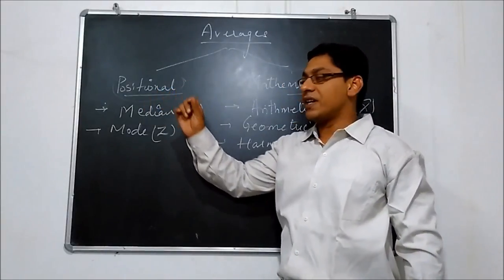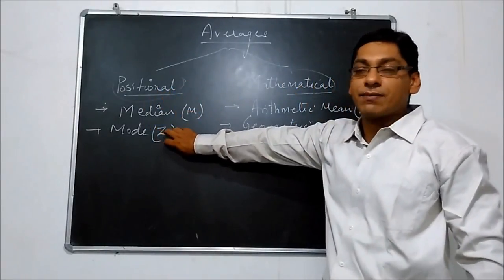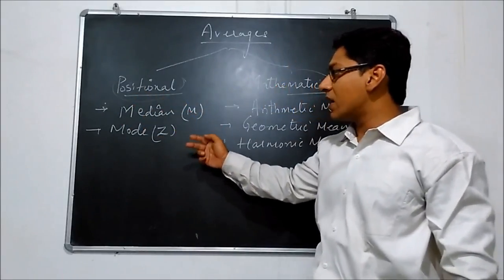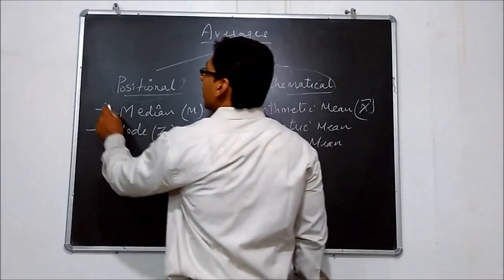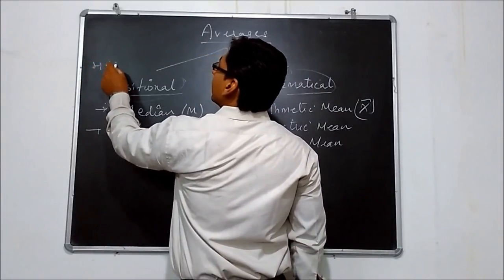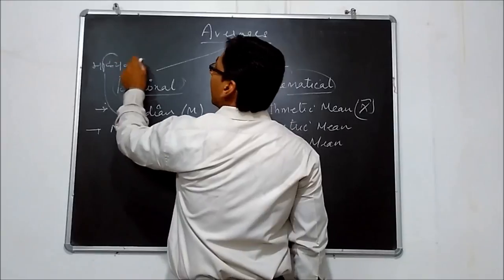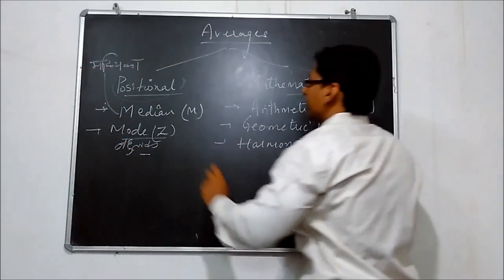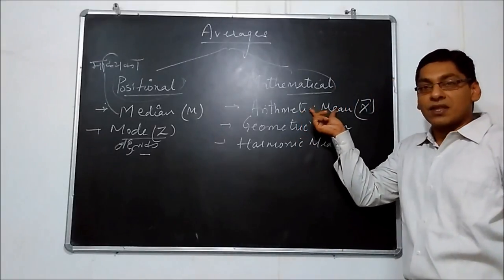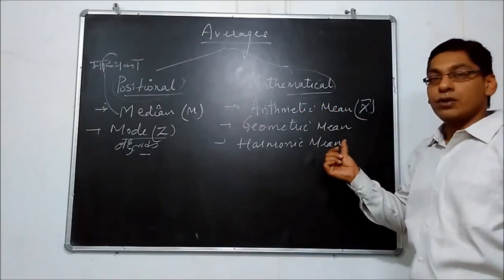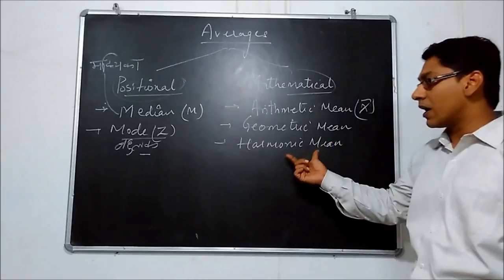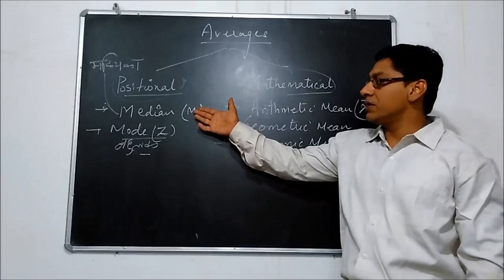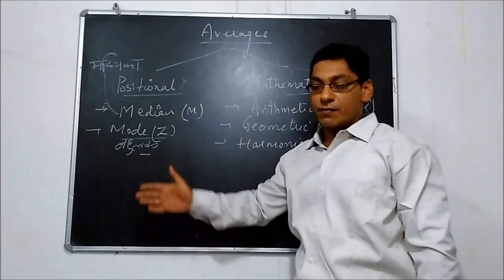In Positional averages, we just look at the position. We have two averages: Median and Mode. In Hindi, Median is 'Madhyada' and Mode is 'Movamiento'. Arithmetic Mean is 'Samantra Math', Geometric Mean is 'Unatmak Math', and Harmonic Mean is also 'Unatmak Math'. So we discuss these averages one by one.